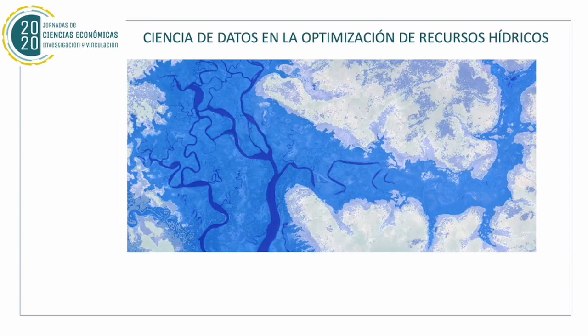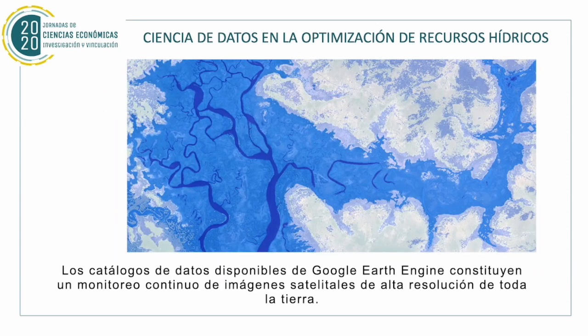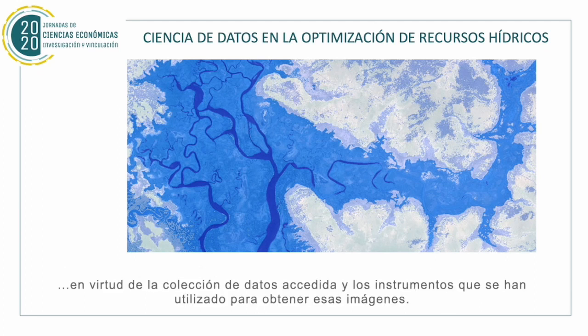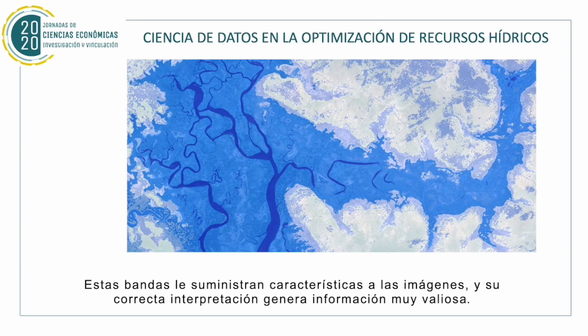Conclusions. The data catalog available from Google Earth Engine constitutes a continuous monitoring of high-resolution satellite images from the entire Earth. With coordinates expressed in latitude and longitude, it is possible to access a collection of images captured with different sensors, expressed on different satellite bands. The tools used to obtain those images supply characteristics to the images, and their correct performance generates very valuable information.